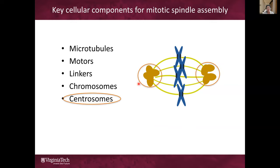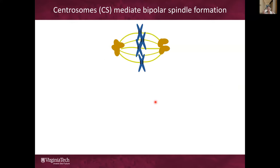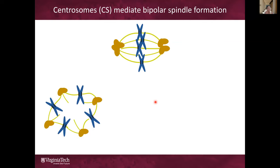These yellow blobs are the centrosomes that form the poles of this bipolar mitotic spindle. The centrosomes are the major microtubule organizing centers in mitotic cells. There are other microtubule organizing centers, but during mitosis these are the major ones, and they mediate the formation of the two spindle poles. When the centrosomes are perturbed, a different number of spindle poles may form. For example, when centrosome duplication or separation went wrong in the previous cell cycle, the cell can get multiple centrosomes, and in this case the cell may form a multipolar spindle.